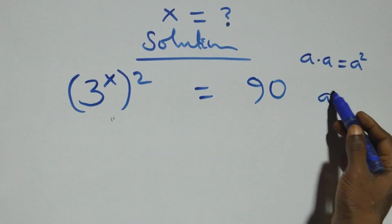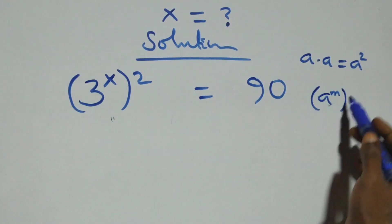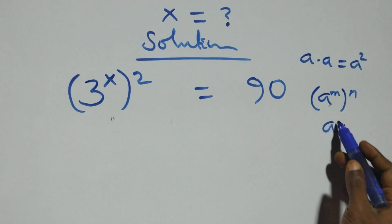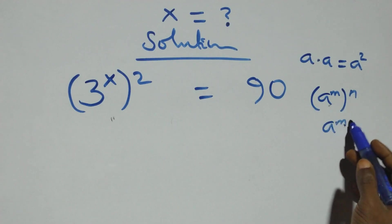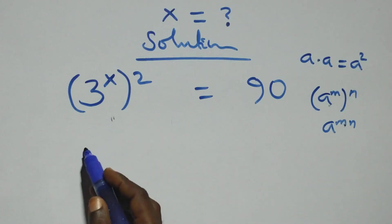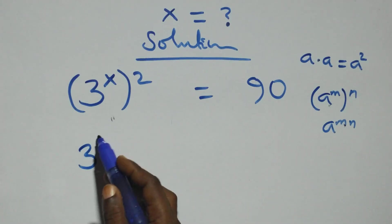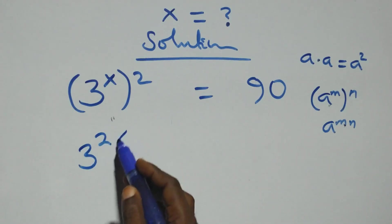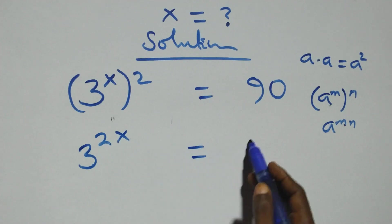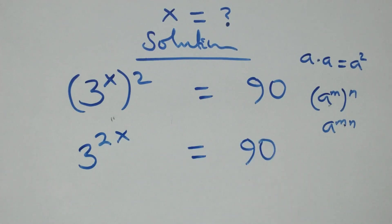This follows from when we have a raised to a power, times a raised to the same power — this is the same thing as a raised to the sum of those powers. So the power multiplies and we have 3 raised to power 2x equals 90 on this side.